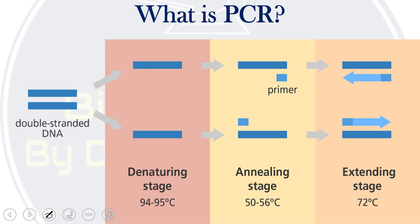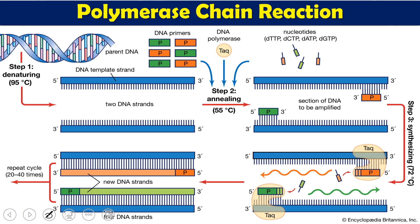In the basic setup of conventional PCR, we start with double-stranded DNA. There are three different stages. In the first stage, DNA is denatured at a very high temperature — roughly 94 to 95 degrees centigrade — where hydrogen bonds are broken and the two strands are separated. In the second stage, temperature is reduced to around 54 degrees centigrade, where primers bind with the respective strands of the single-stranded DNA — a process called annealing.